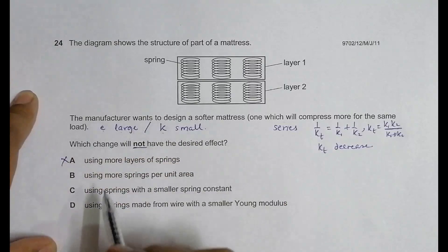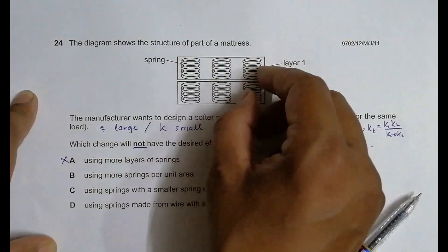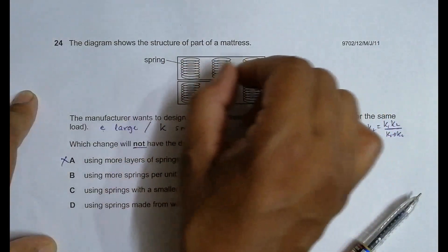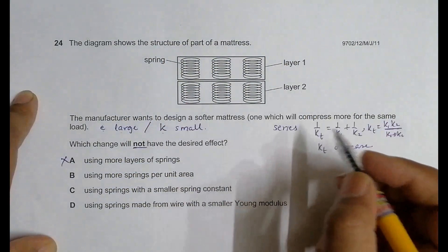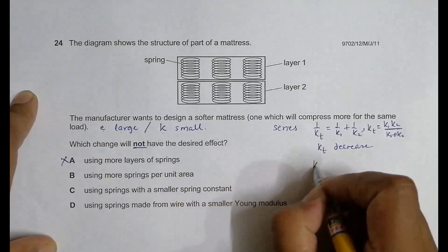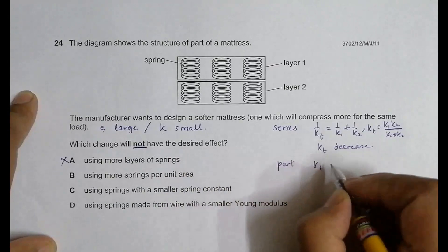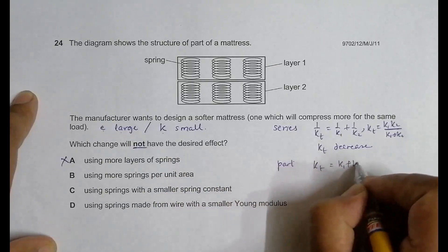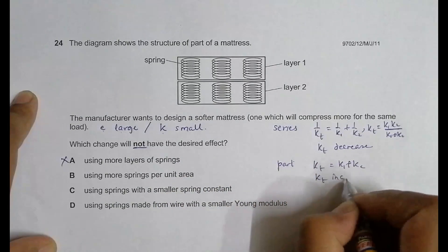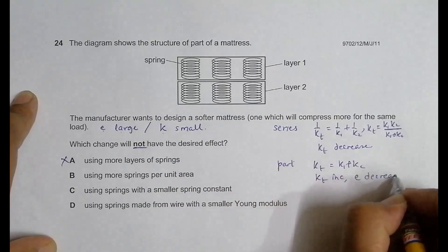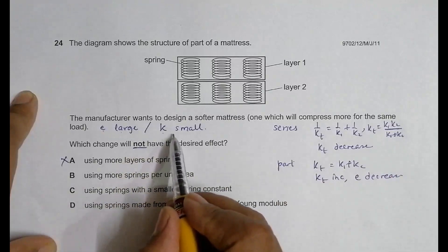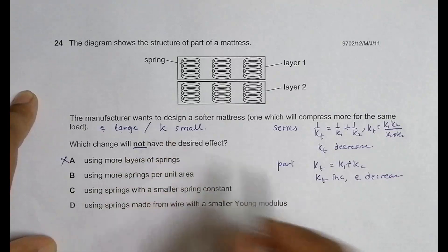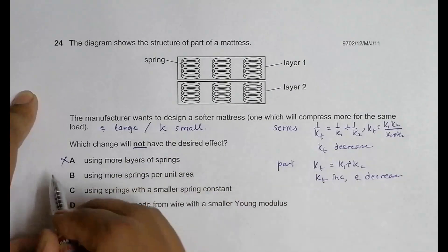Option B: using more springs per unit area means adjusting more springs here, adding springs in parallel. In parallel, k_total = k1 + k2, so k_t increases and E decreases. We need E not large and k not small. Here we have E decreasing, becoming smaller, so this could be the correct answer.